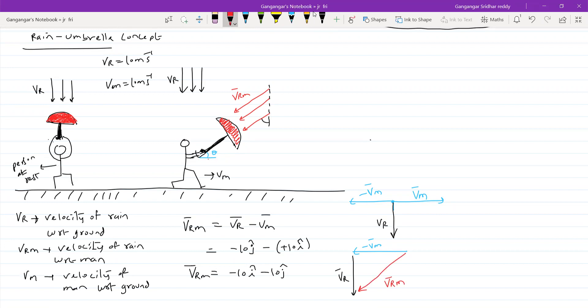So this is vrm bar. What is the basic definition? vr bar minus vm bar. Let me take this as theta. What is tan theta now? vr bar over vm, so this will be 10 by 10, 45 degrees. What is the velocity of raindrops, the magnitude? The speed raindrops will strike umbrella - I think it will be 10 root 2.